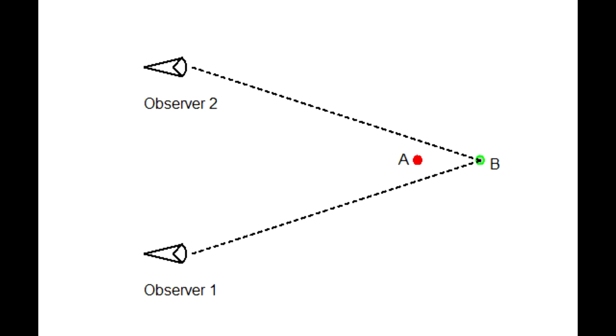Parallax is the displacement or difference in the apparent position of an object viewed along two different lines of sight. In this drawing, the upper viewer sees object A as below object B. The lower viewer sees object A above B.